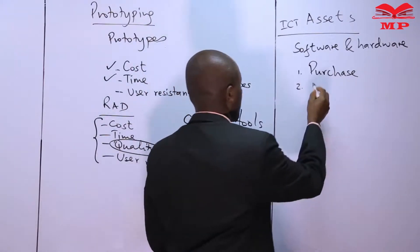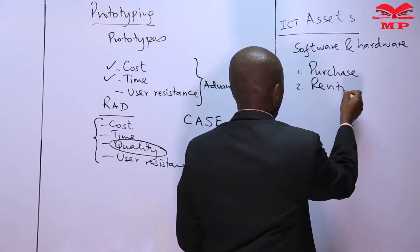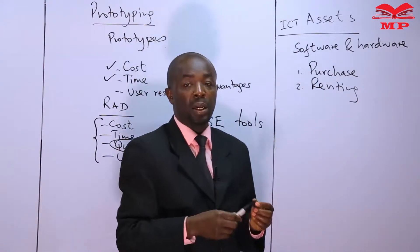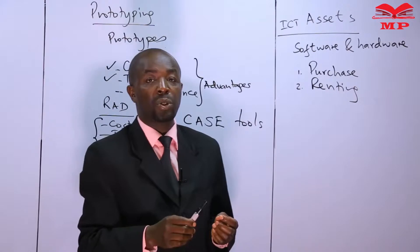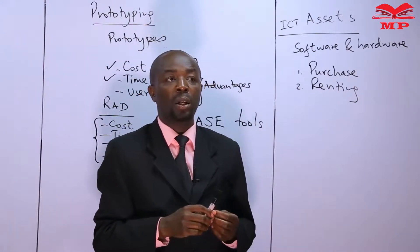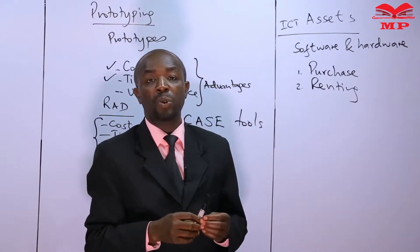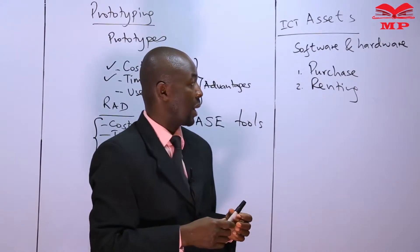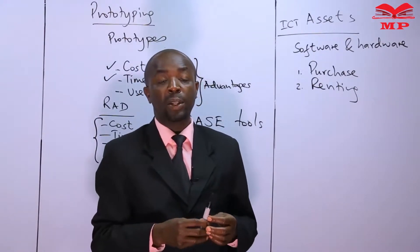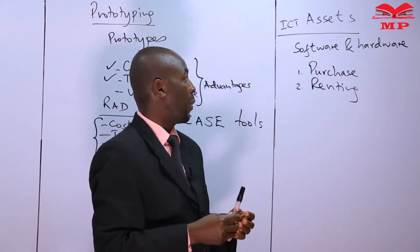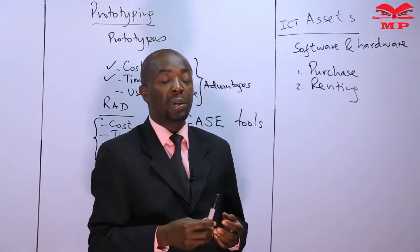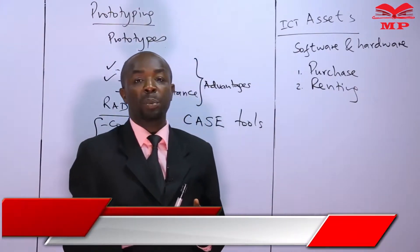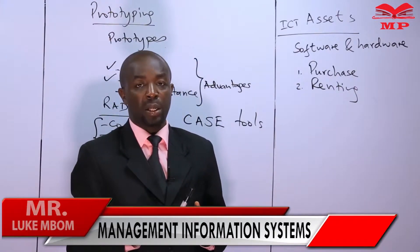But the disadvantage of purchasing is that the hardware and software may become obsolete and we may not have anywhere to take it. The second method of acquiring hardware and software is called renting. The organization signs a rental contract which specifies the use of the computer system. Renting is expensive from a long-term perspective, but cheaper from a short-term perspective. The benefit of renting is that the organization will not suffer from the problem of obsolescence.